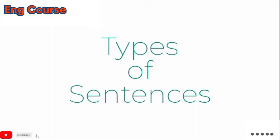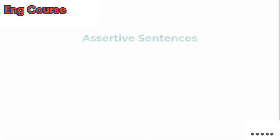Today we have types of sentences, and today we will see the types of sentences. First of all, we have assertive sentences. Assertive sentences are those sentences that tell us simple information and tell us some simple things.